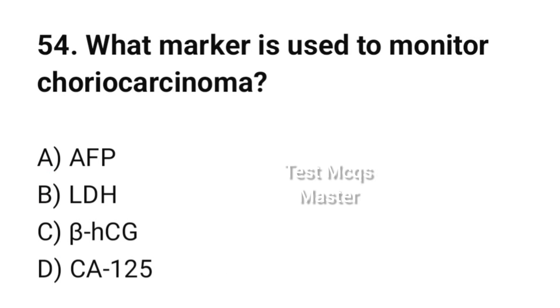Question number 54. What marker is used to monitor choriocarcinoma? The correct option is C: Beta-HCG.